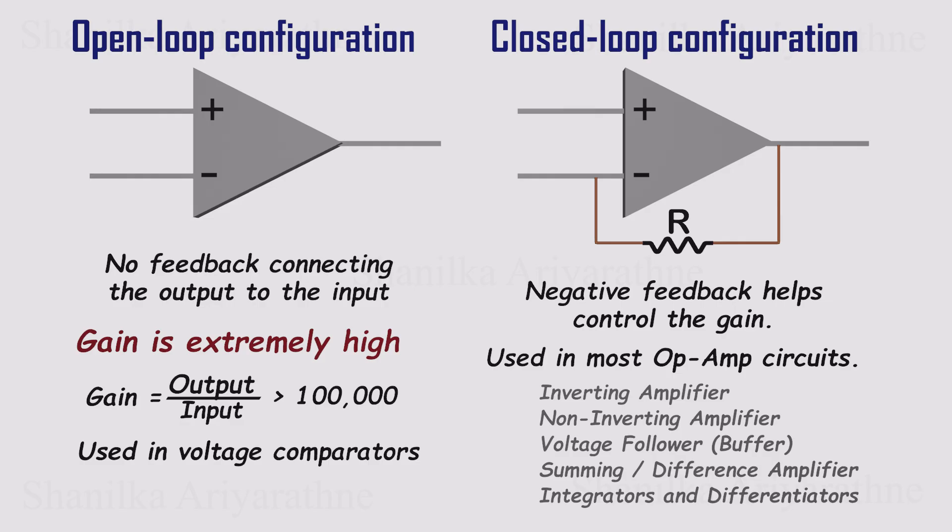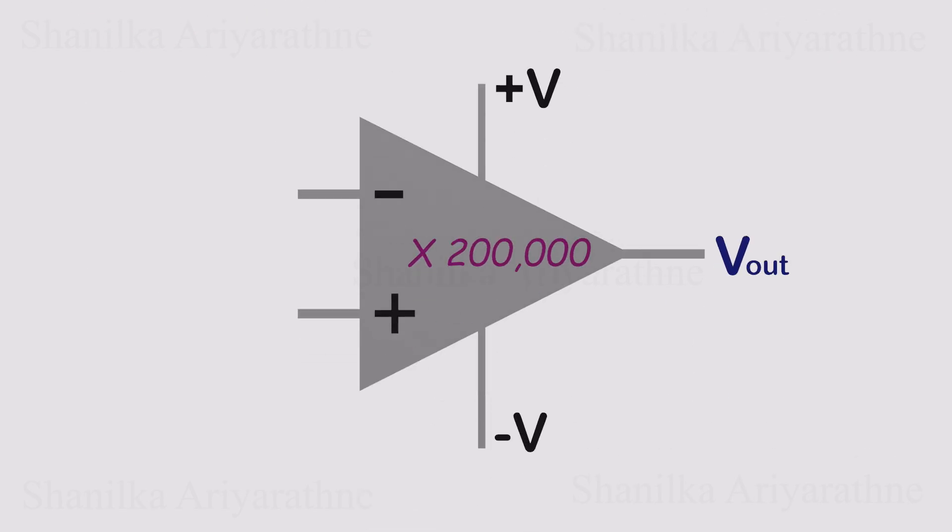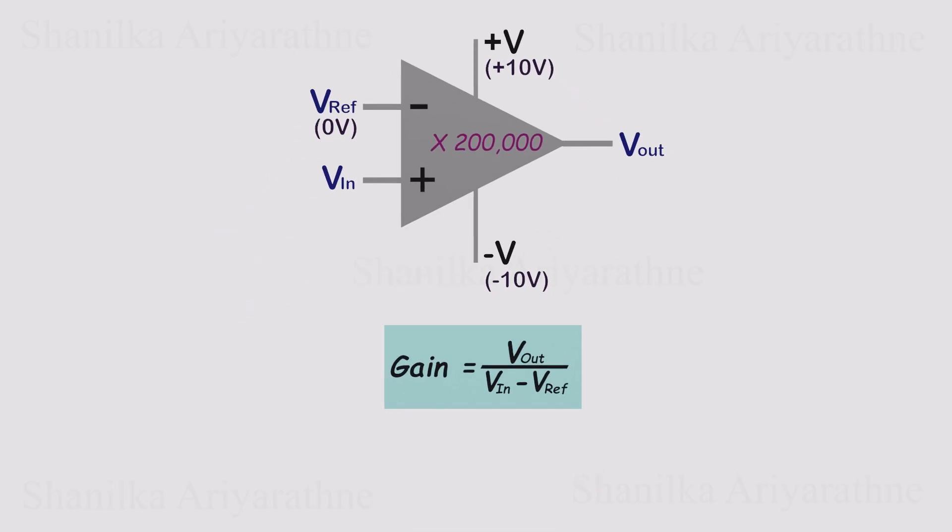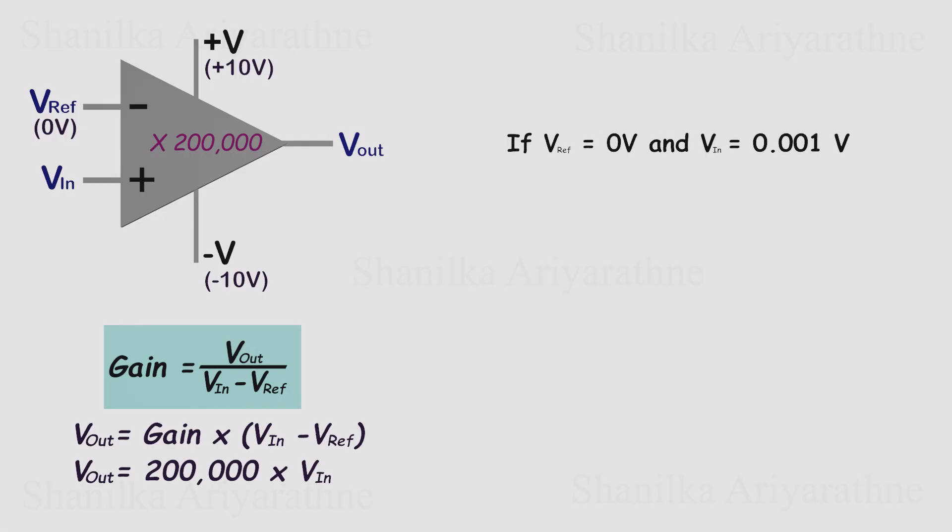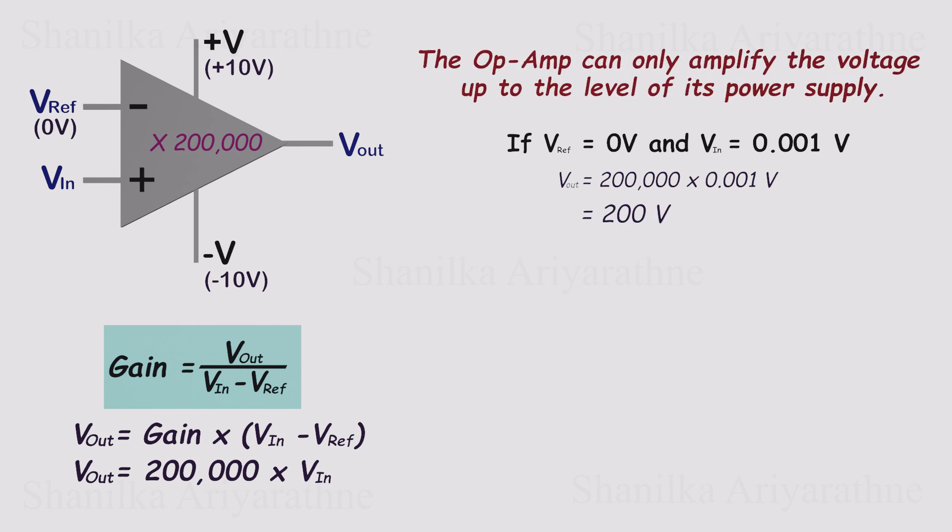Let's make this more concrete. Imagine an op amp with a gain of 200,000, powered by a plus minus 10 volts supply. The inverting input is fixed at 0 volts, and we vary the non-inverting input. Gain is simply the output voltage divided by the difference between the inputs. With a gain of 200,000 and Vref at 0, we can calculate the output for any small input change. If the non-inverting input is just 0.001 volts higher, the op amp tries to output 200 volts on paper, but in reality it quickly hits its limit at plus 10 volts. This is called saturation.